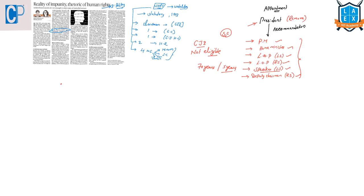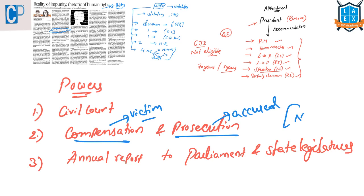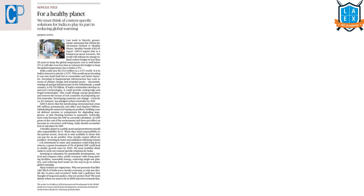The NHRC has the powers of a civil court. It can look into cases if they are received within one year of the crime, and it can recommend compensation to the victim and prosecution of the accused. However, these recommendations are not binding. It must submit special or annual reports to Parliament as well as state legislatures, along with the action taken on their recommendations, and should also list reasons for non-acceptance of their advice.